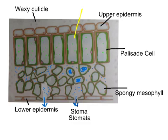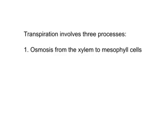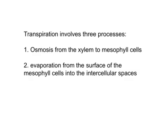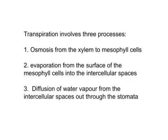Once the water vapour potential is higher inside the leaf than outside, the water vapour moves out by diffusion — the easiest route being through the open stomata. Transpiration involves three processes: first, osmosis moves water from the xylem to the mesophyll cells; second, evaporation occurs from the surface of the mesophyll cells into the intercellular spaces; and third, diffusion moves water vapour from the intercellular spaces out through the stomata, down a water vapour potential gradient.